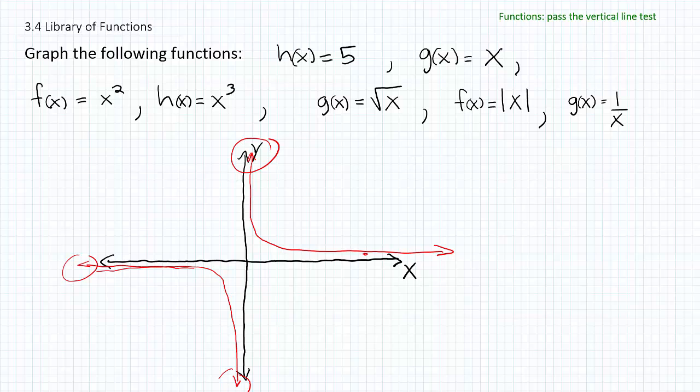Anything you see in the structure of one over x in that general pattern is going to look something like this. You can move these swooshes around the graph and change where the asymptote occurs, but essentially a simple rational function like one over x is going to look something like this.